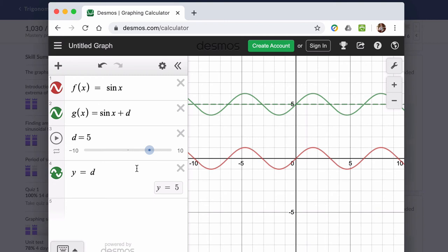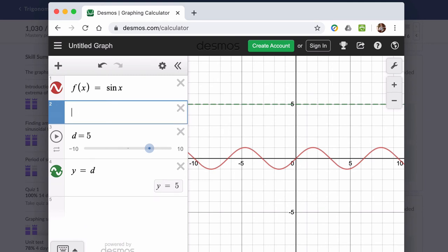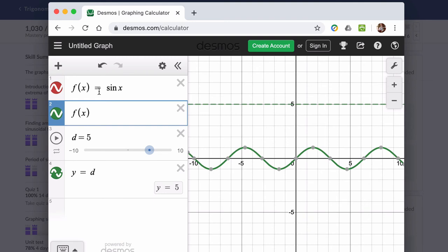What's really happening here is what happens in all function transformations. So to show you this, instead of writing a separate function g of x, let's say we just consider the function f of x, which is the sine of x, our original function, plus d.